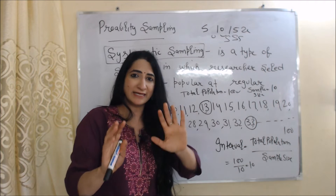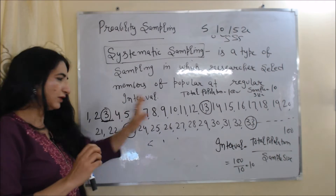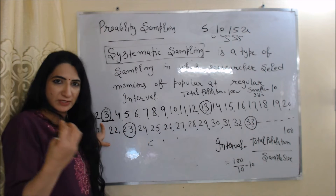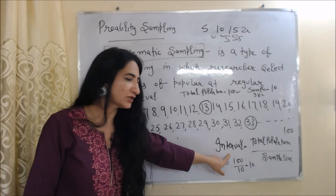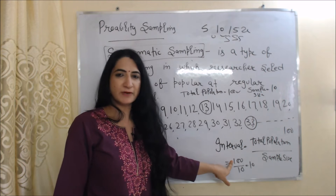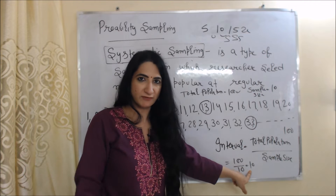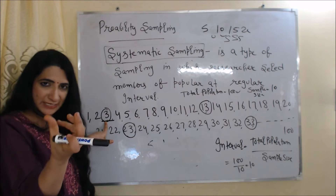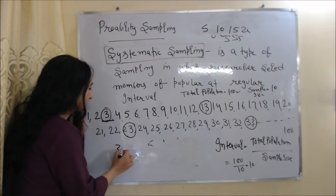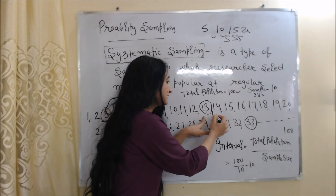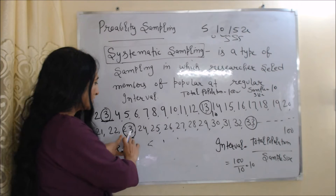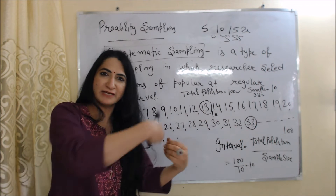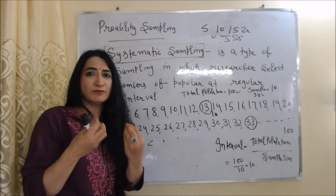Total population is 100 and required sample size is 10. First, we arrange the population in ascending order from 1 to 100. The first sample is randomly selected — suppose we select number 3. After that, we calculate the interval using the formula: total population divided by sample size, which is 100 divided by 10, equal to 10. So we keep a gap of 10. Starting from 3: next sample is 13, then 23, then 33, and this process continues until we have collected the required sample size.